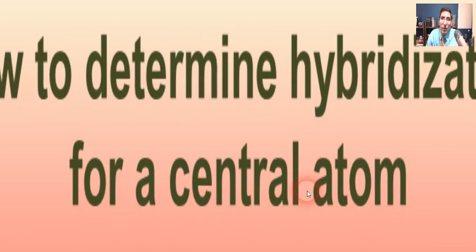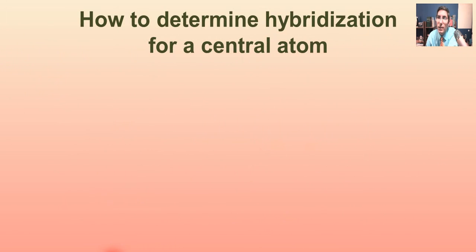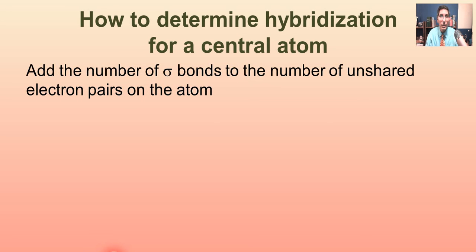Now, how do we figure out the hybridization on any central atom in a molecule? Well, we could do that little exercise for every single molecule that we could ever have, but that would be time-consuming. So let's find a shortcut. Here's the shortcut, the easy way, because this is AP chemistry, the easy way.